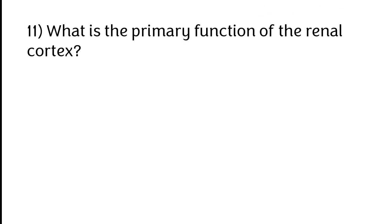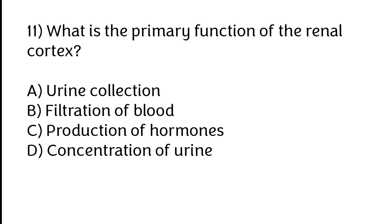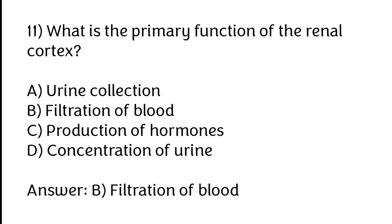What is the primary function of the renal cortex? Options: A) Urine collection, B) Filtration of blood, C) Production of hormones, D) Concentration of urine. The correct answer is option B, filtration of blood.